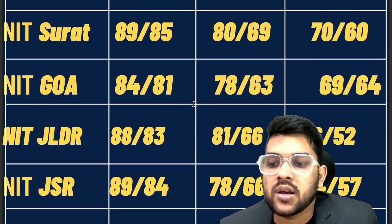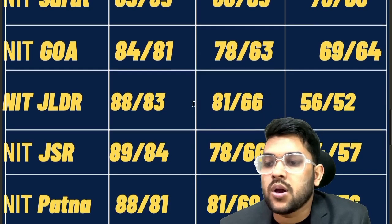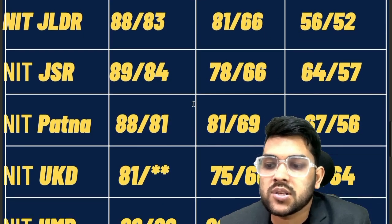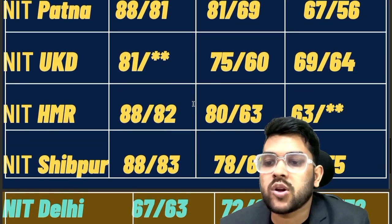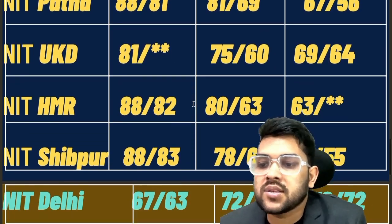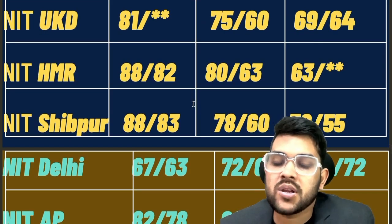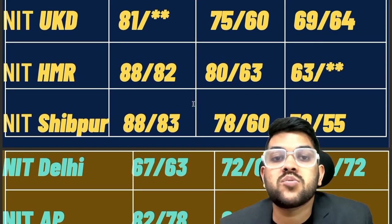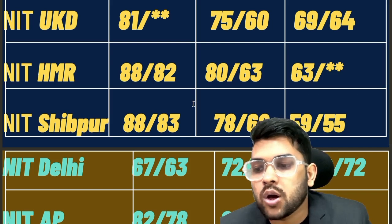For Jamshedpur: 89, 78, 64. For Patna: 88, 81, 67. For Uttarakhand: 81, 75, 69. For Hamirpur: 88, 80, 63. For Shibpur: 88, 78, 59. The figures after the slash are for female students.